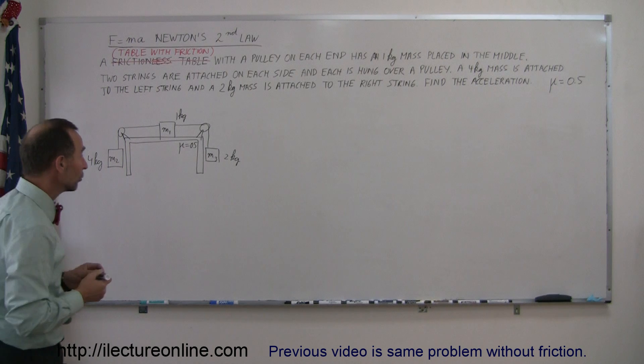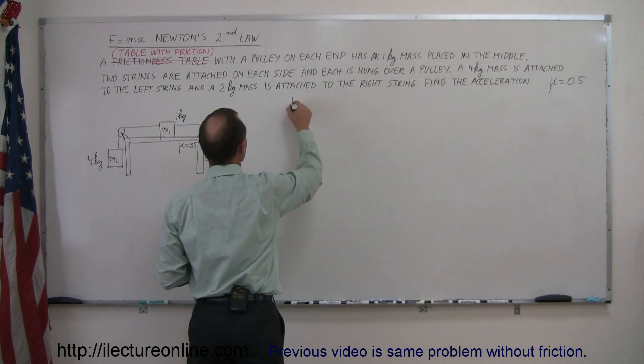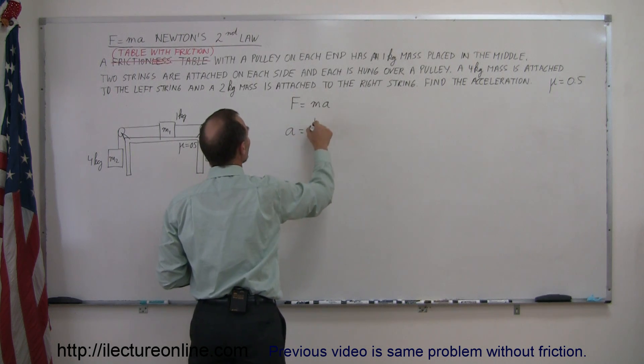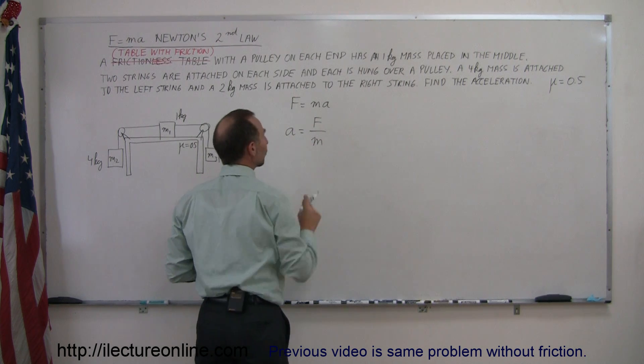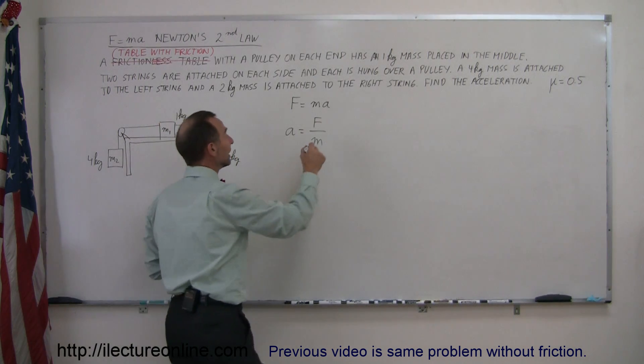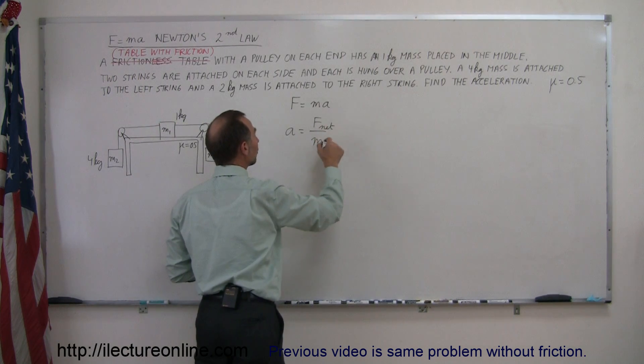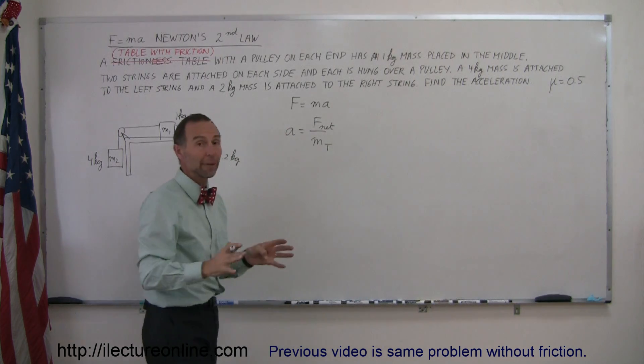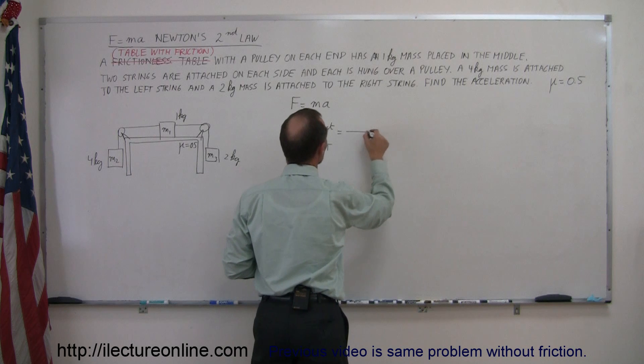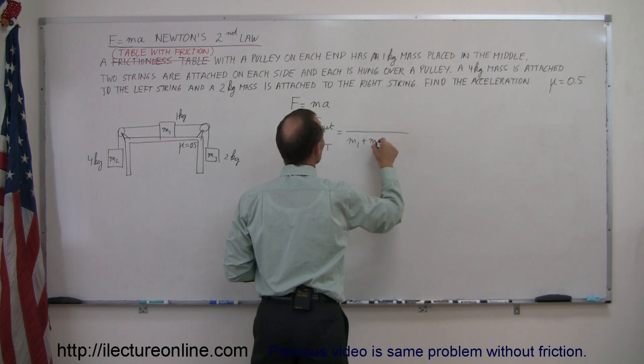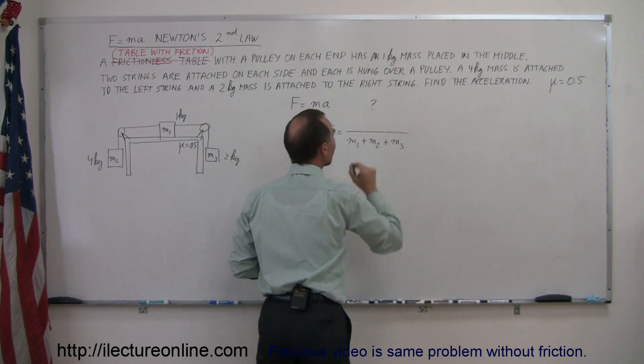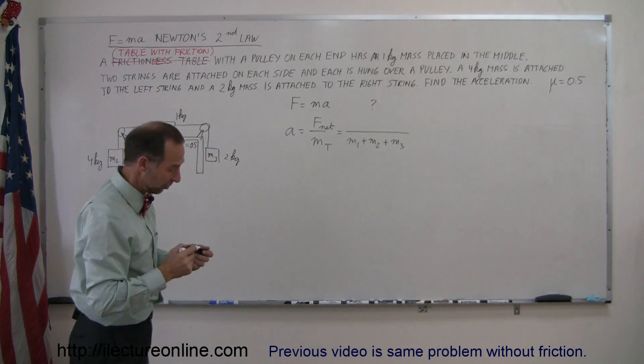We're going to use F equals MA. Rearranging, A equals F over M. When we do a problem with multiple masses, we consider the net force acting on the whole system divided by the total mass of the system. Since there's three masses, the total mass is M1 plus M2 plus M3. Now all we have to do is figure out the net force on the system.